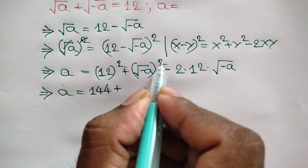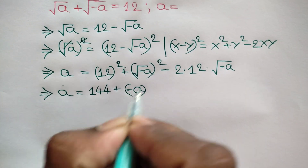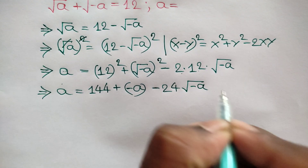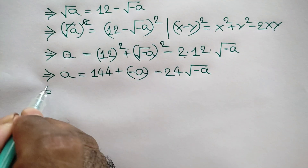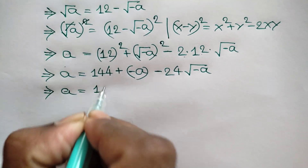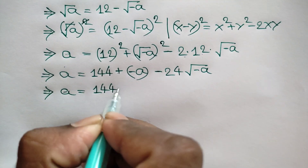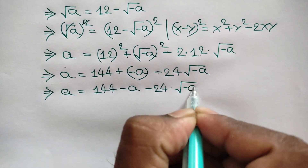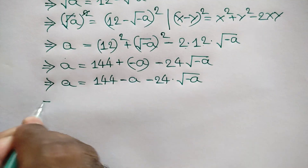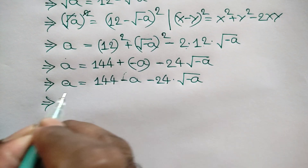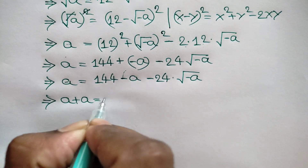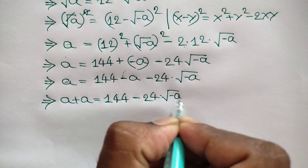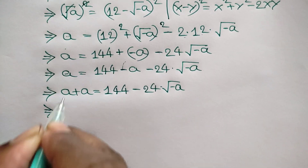The square root of negative a whole square simplifies to negative a, giving us: a equals 144 plus negative a minus 24 times square root of negative a. That is: a equals 144 minus a minus 24 times square root of negative a. Now taking negative a to the left side, we get a plus a equals 144 minus 24 times square root of negative a.